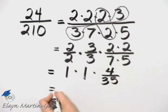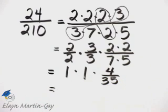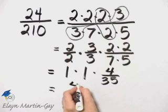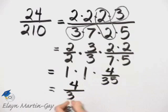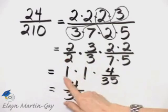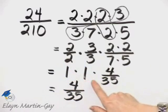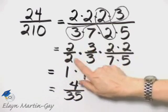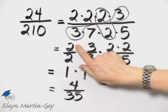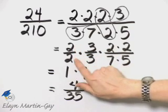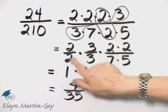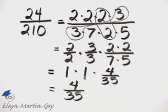And then what happens? Well, 1 times 1 times 4 over 35 is simply 4 over 35. To simplify, we are essentially removing factors of 1, and those factors of 1 are represented by the same number on top in the numerator as in the denominator. So we've simplified, and in simplest form, it is 4 over 35.